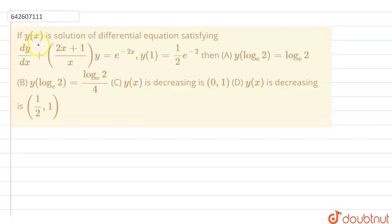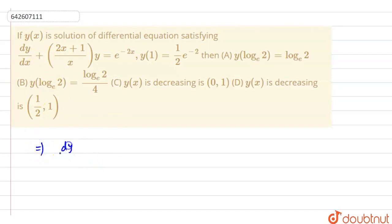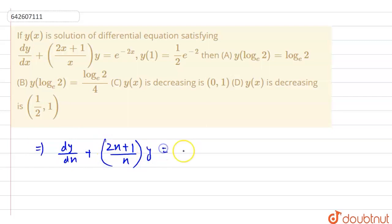Hello, welcome everyone. In this question we have been given that y(x) is the solution of this differential equation. We have to check the given options. So let us first solve this differential equation: dy/dx + (2x + 1)/x multiplied by y is equal to minus 2x.